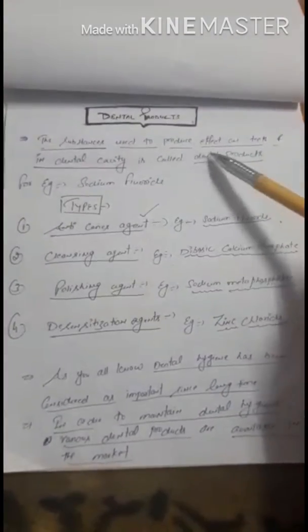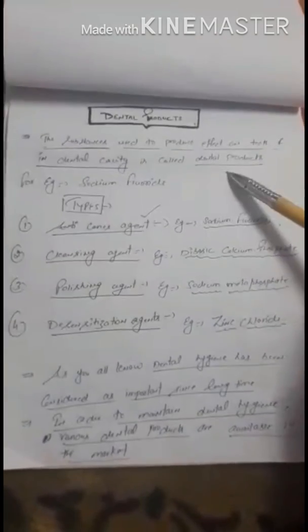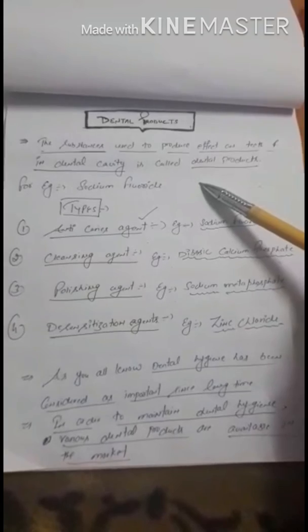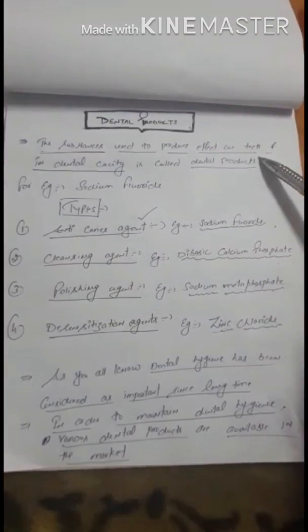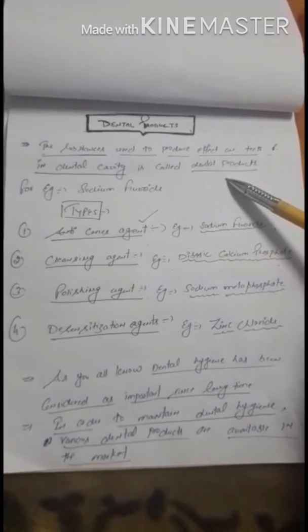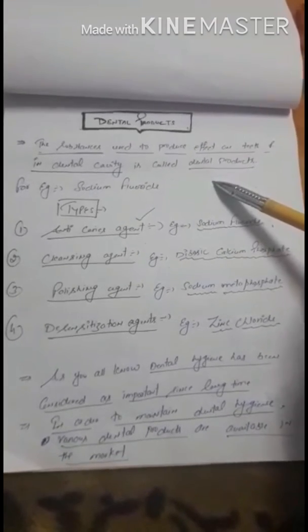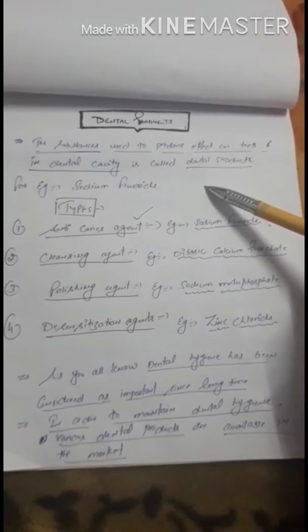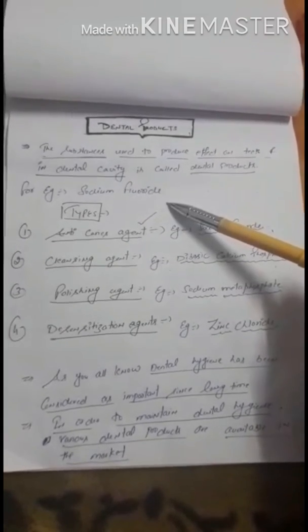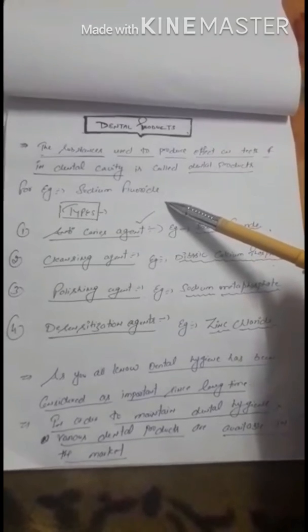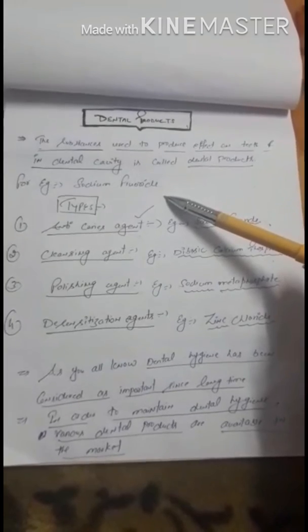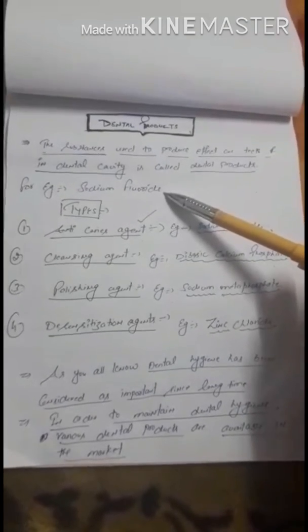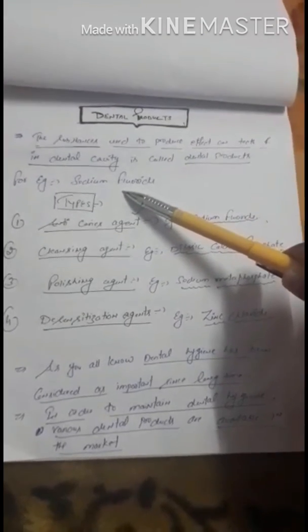Now moving to the definition of dental products: the substances used to produce an effect on teeth and in the dental cavity are called dental products. These are substances used for teeth and in the dental cavity. For example, sodium fluoride — since first year pharmaceutical chemistry belongs to inorganic compounds, the examples explained in dental products are also related to inorganic compounds.